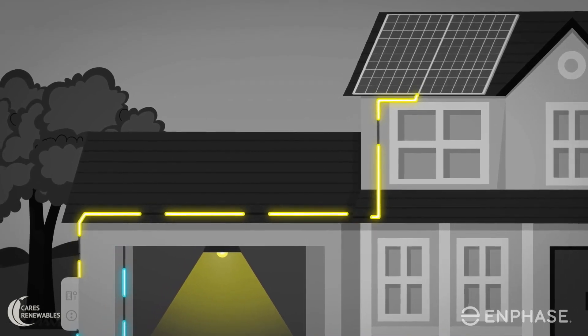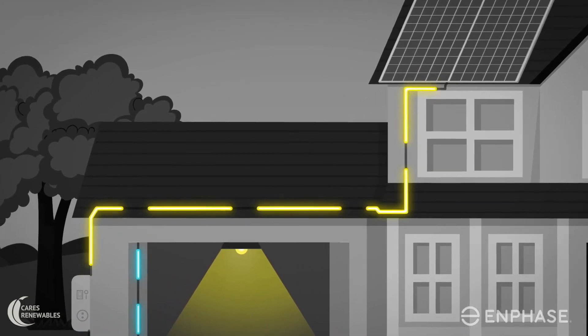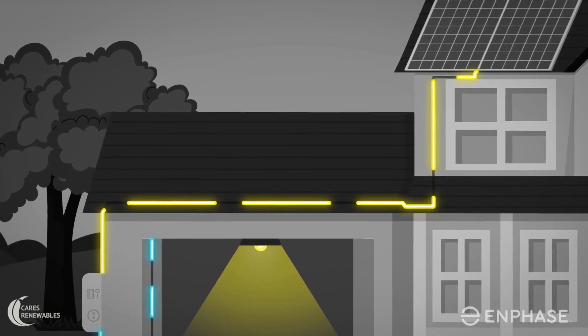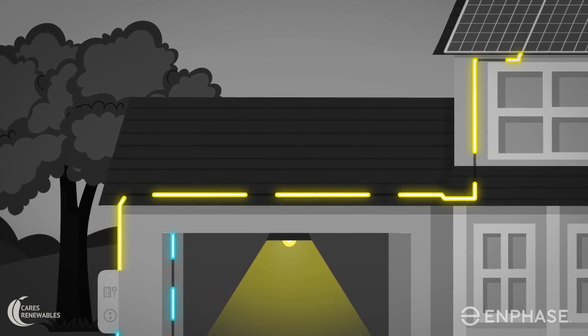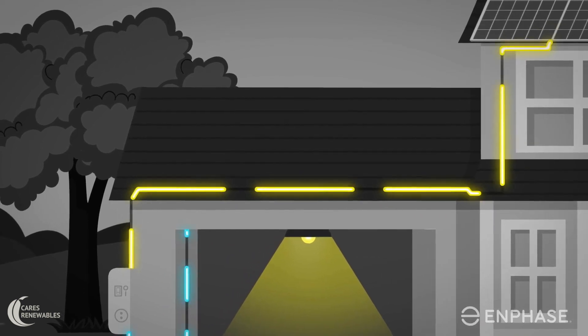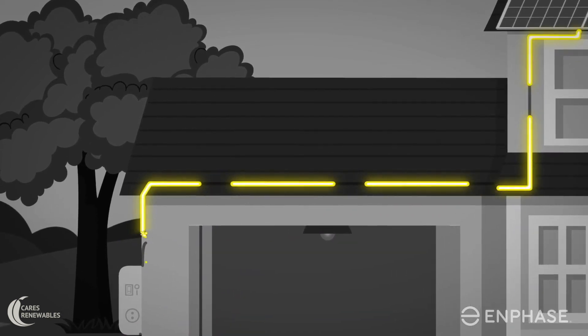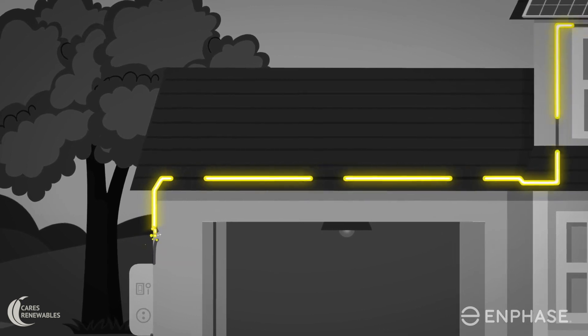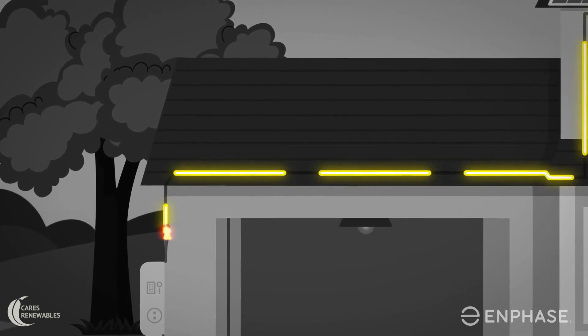DC as the name indicates delivers a continuous stream of electricity, so if there is any break in the DC cables or connections, it's hard to stop. Such breaks could create a DC arc with temperatures as high as 4,200 degrees Celsius leading to fire.